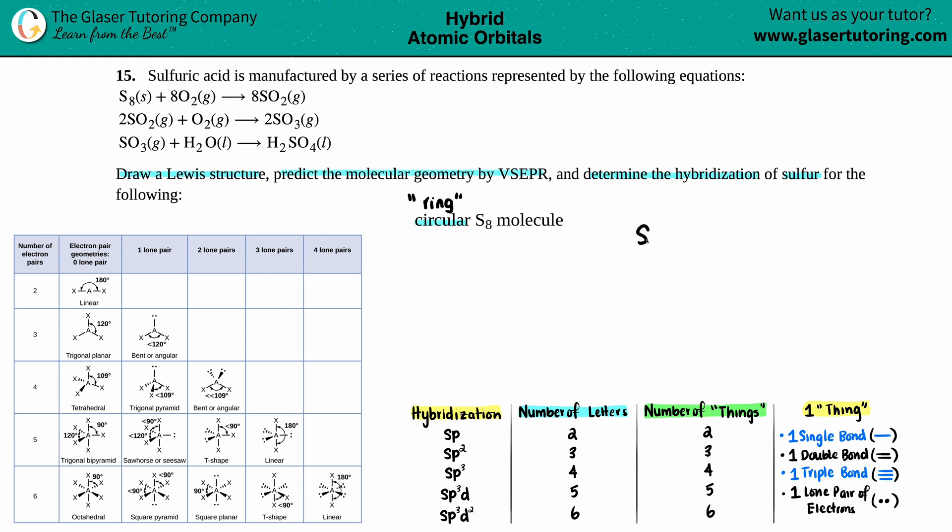So I'm going to arrange it in that type of fashion. So I have an S, I have one, two, oh boy, three, four, five, six, seven, eight. And that's good enough for me. As you can see, it's kind of like the octagonal shape. Now, remember, Lewis structures comes from valence electrons.